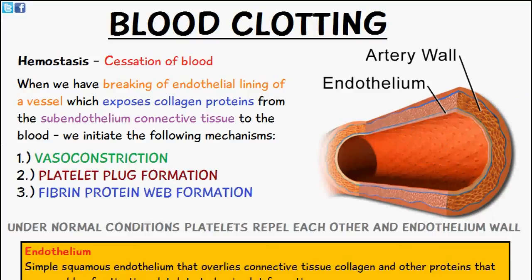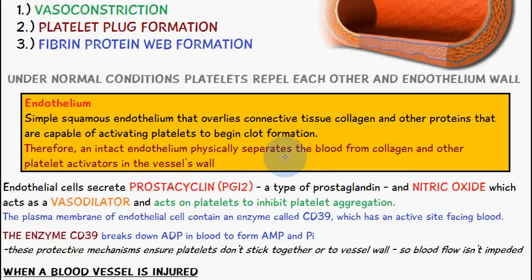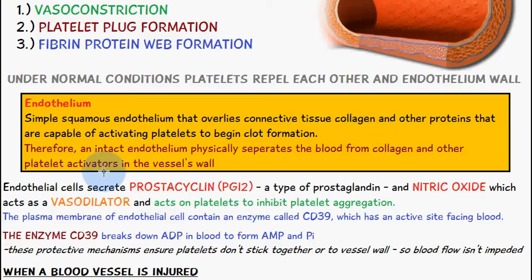Under normal conditions, the platelets repel each other and the endothelium wall. The endothelium itself consists of simple squamous endothelium, which overlies connective tissue collagen and other proteins that are capable of activating platelets to begin clot formation. Therefore, an intact endothelium physically separates the blood from the collagen and other platelet activators in the vessel wall.